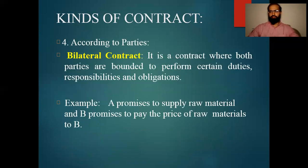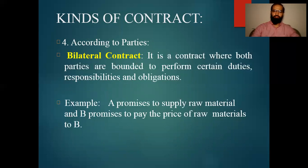The Bilateral Contract is a contract where both parties are bound to perform certain duties, responsibilities and obligations. Both parties have to fulfill their duties. For example, A promised to supply raw materials and B promised to pay the price of those raw materials. Both have made promises, but this contract has yet to be performed. This is what is called a bilateral contract.